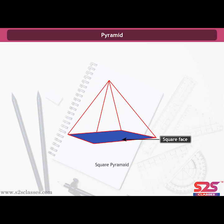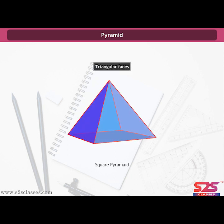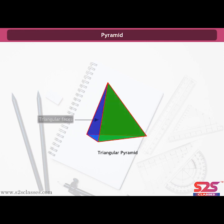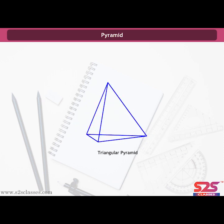Pyramid. The other faces of a pyramid are triangles. A square pyramid has five faces: one square face (the base) and four triangular faces. It has eight edges and five vertices. A triangular pyramid has four triangular faces: one triangular base and three other triangular faces. It has six edges and four vertices.